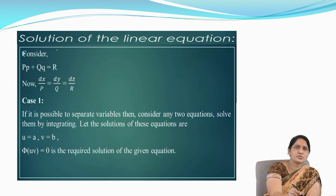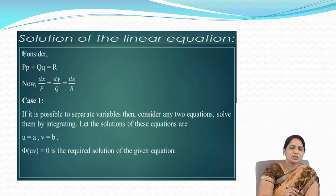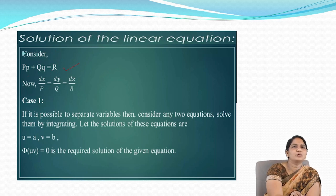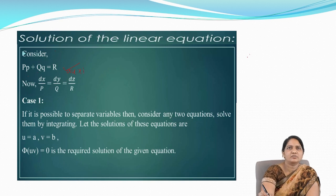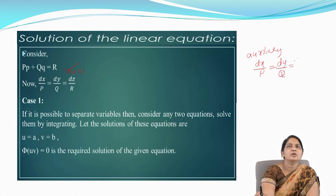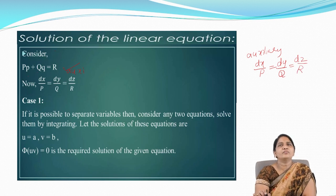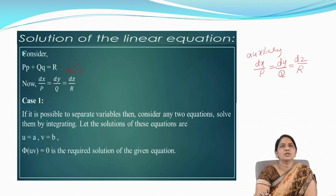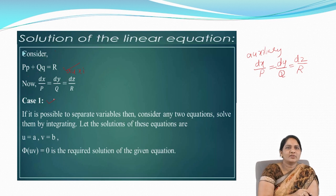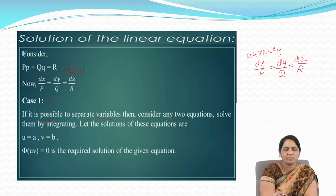Now I am giving information about the solution of the linear equation. We have the Lagrange's linear equation P·p + Q·q = R, and we write the auxiliary equation dx/P = dy/Q = dz/R. There are some possibilities to solve this. In Case 1, if it is possible to separate the variables, then consider any two equations and solve them by integrating.